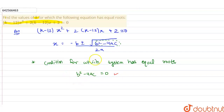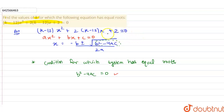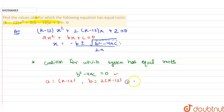Now we are going to compare this given quadratic equation with our standard quadratic equation ax squared plus bx plus c equals zero. By comparing the given quadratic equation with our standard quadratic equation, we get: a equals k minus 12, b equals 2(k minus 12), and c equals 2.